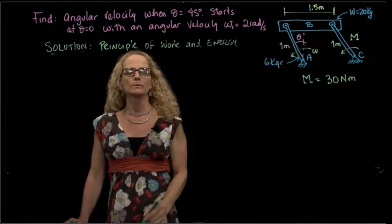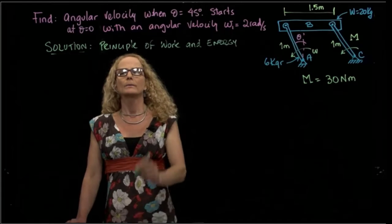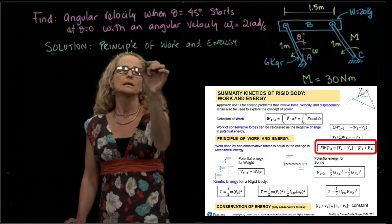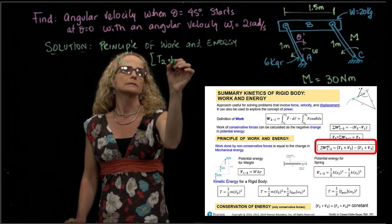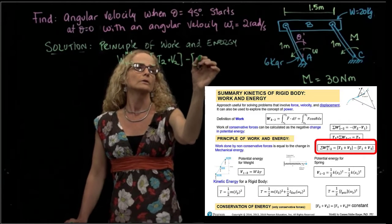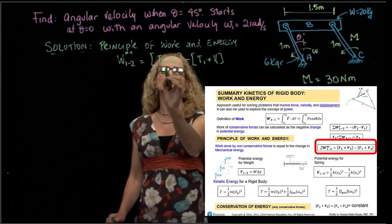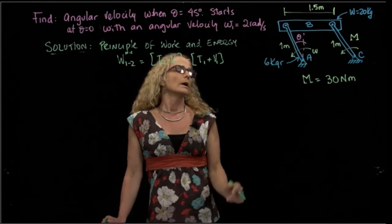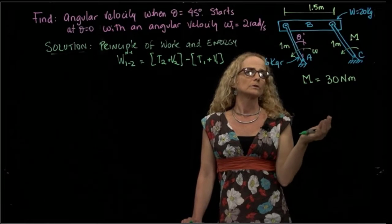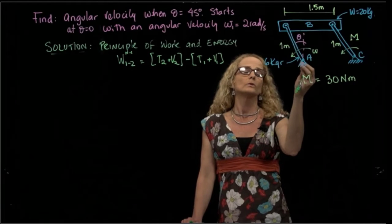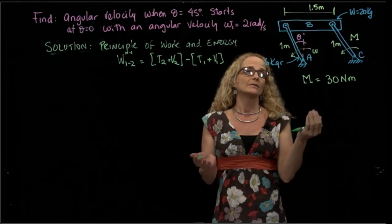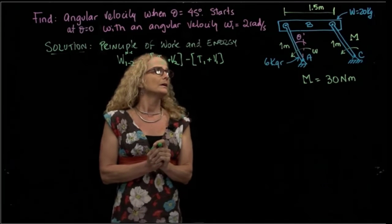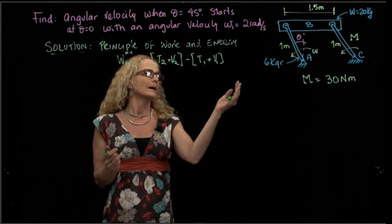As you remember, there are several ways to write that principle. The way I like to write it is: the work of non-conservative or applied forces equals the total energy in the second position minus the total energy in the first position, where total energy is kinetic energy plus potential energy. The internal forces of the link reactions do not do work because there is no displacement or relative displacement at those points.